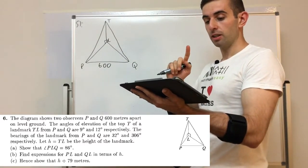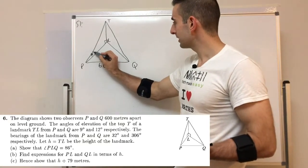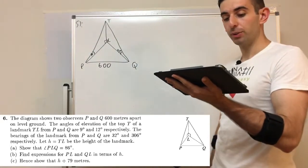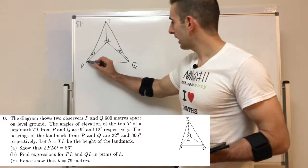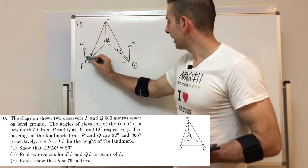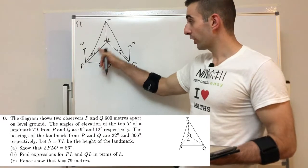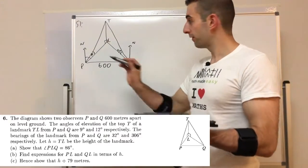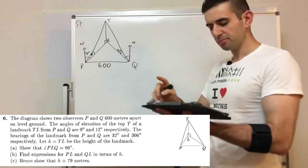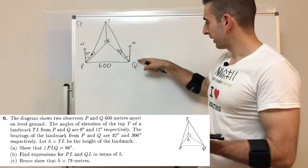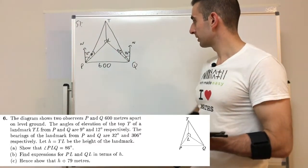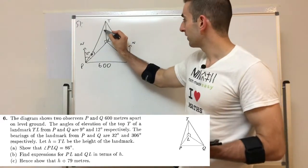So they've told us P and Q are 600 meters apart. The angles of elevation are 9 degrees and 12 degrees respectively from P and Q. So this is 9 degrees here, 12 degrees here. And then they said the bearings of the landmark from P and Q are 32 degrees and 306 degrees. So if we include that, we need a north line at P and a north line at Q and the bearing is along the ground. So L is on the ground, P to L. The bearing is this angle here which they said was 32 degrees. And then the bearing from Q to L which is along the ground here, which is this angle here, is 306 degrees. So this complete angle is 306 degrees, that means what's left here is 54 degrees to get to 360 degrees. And then they've said let H be the height of the landmark, so that's our unknown.